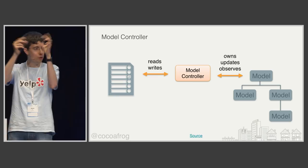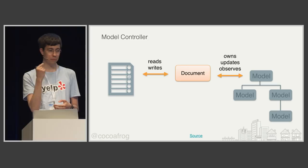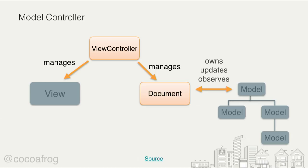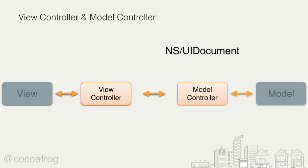Apple goes on to explain in the document-based application guide how this interacts with view controllers. For iOS, the view controller manages the document and the view. So in addition to the view controller and model, we can split up our controller into a view controller and a model controller. One example is NSDocument; another you may be more familiar with is NSFetchedResultsController — it has 'controller' in the name, it takes care of the model, and it's a model controller.